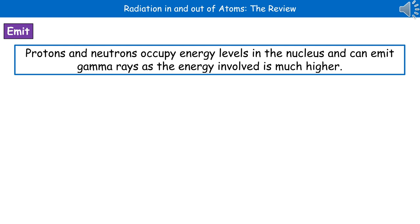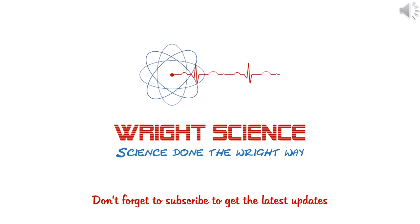Hopefully we remember from our work on the electromagnetic spectrum that gamma rays are the highest energy radiation, and gamma rays are emitted from the nuclei. Protons and neutrons occupy energy levels in the nucleus, and they can emit gamma rays as the energy involved there is much higher than what we see with our electrons.